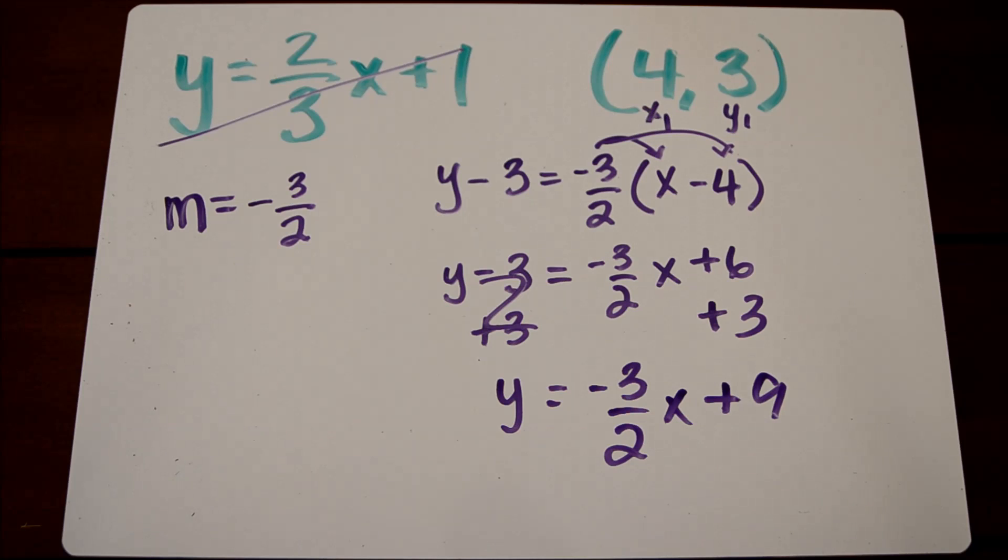And this is our equation in slope-intercept form that goes through the point four-three and is perpendicular to the equation y equals two-thirds x plus one.